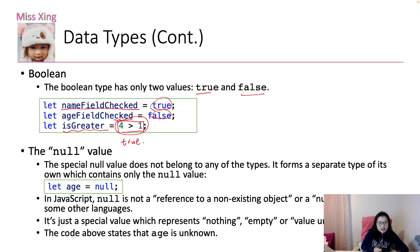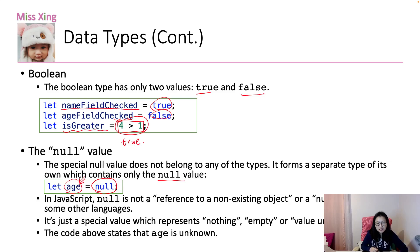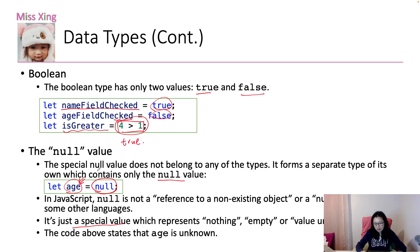The null value is a special value that does not belong to any of the other types in JavaScript. It forms a separate type of its own which contains only the null value. You define a variable age and explicitly assign null to it, which means the variable exists but the value is null. In JavaScript, null is not a reference to a non-existing object like a null pointer in other languages — it's just a special value which represents nothing, empty, or value unknown.